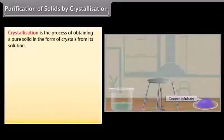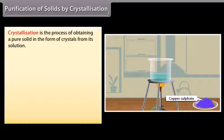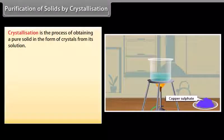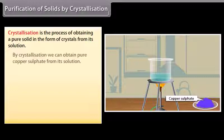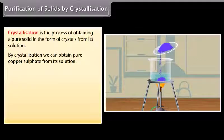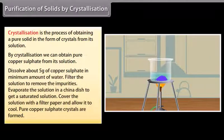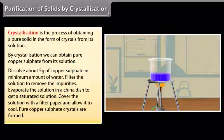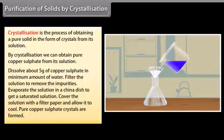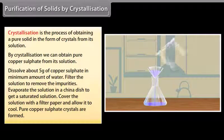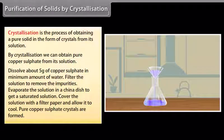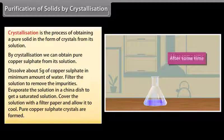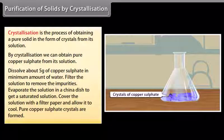Purification of solids by crystallization. Crystallization is the process of obtaining a pure solid in the form of crystals from its solution. By crystallization we can obtain pure copper sulfate from its solution. Dissolve about 5 grams of copper sulfate in minimum amount of water. Filter the solution to remove the impurities. Evaporate the solution in a china dish to get a saturated solution. Cover the solution with a filter paper and allow it to cool. You will see pure copper sulfate crystals are formed.